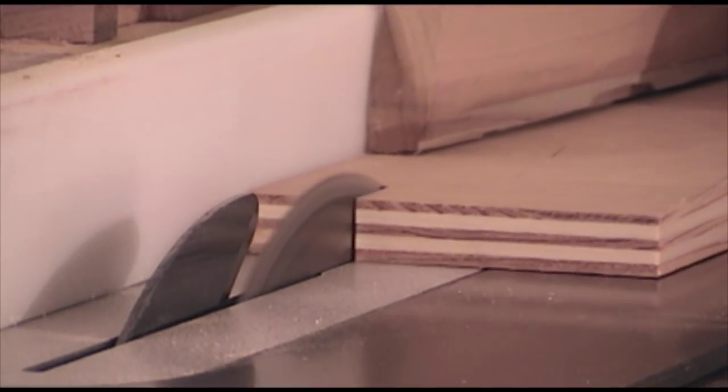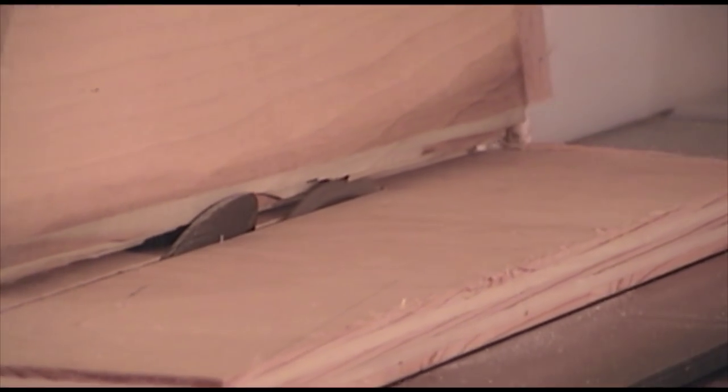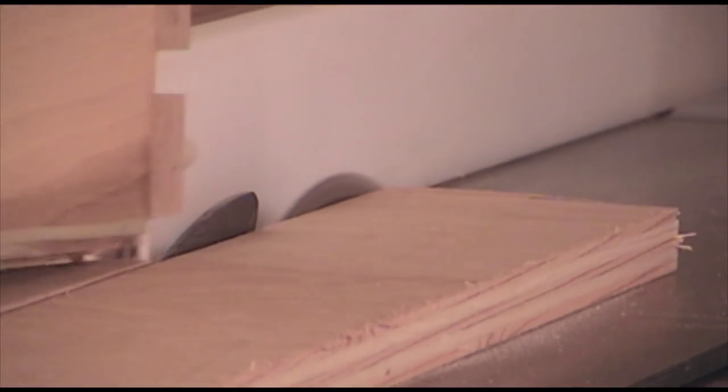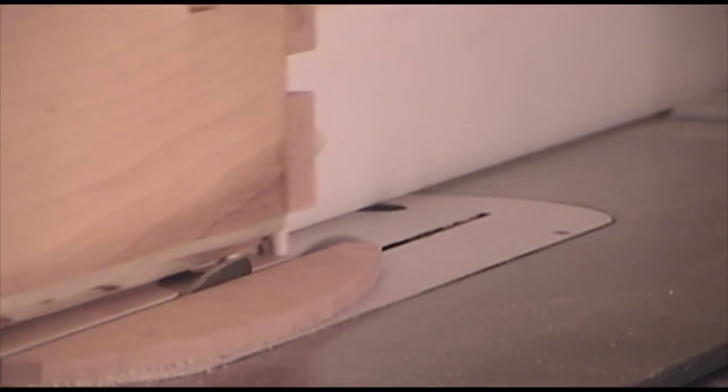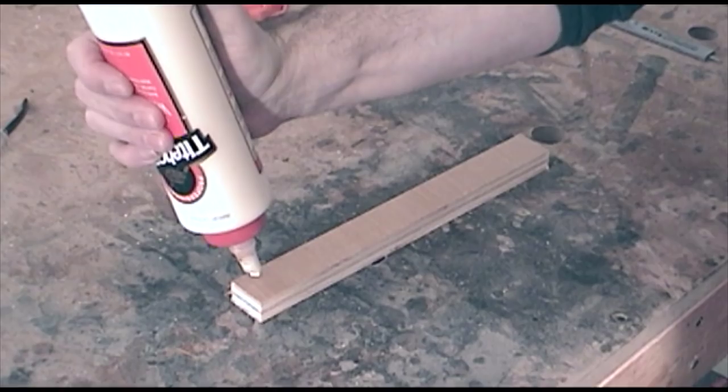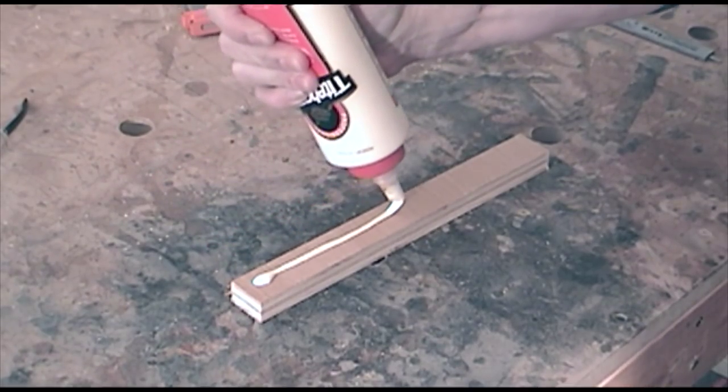For the body of the jig, I'm going to use a piece of three quarter inch plywood. I'm also going to rip a small piece of quarter inch MDF to the same width. So I cut both the plywood and the MDF to rough length. Now I just need to glue the two pieces together.